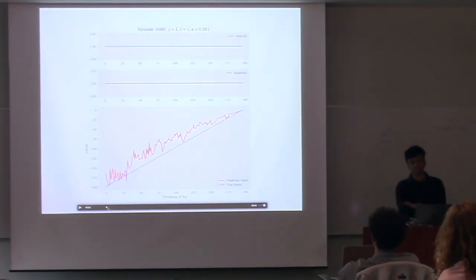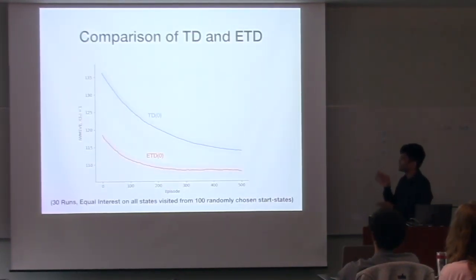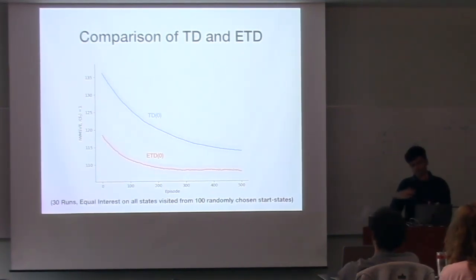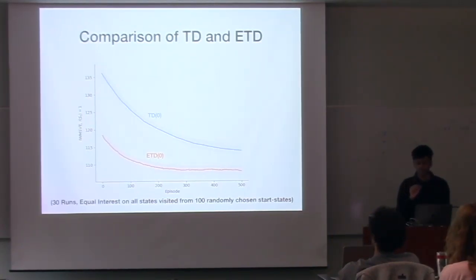So all of these were visualizations of the emphasis algorithm with different settings of interest and lambda, the bootstrapping parameter. Then we can actually go ahead and compare TD and ETD. I did 30 runs with equal interest on all states. For each run I picked 100 randomly chosen start states, and equal interest on all the states visited in those episodes. The plots show ETD does better. But now I'm going to talk carefully about how we should be thinking about the relation between TD and ETD.